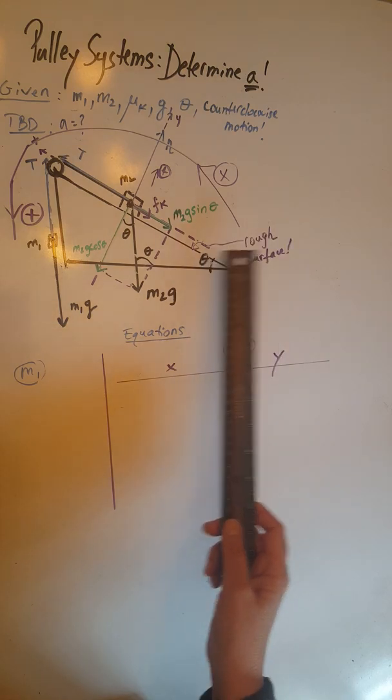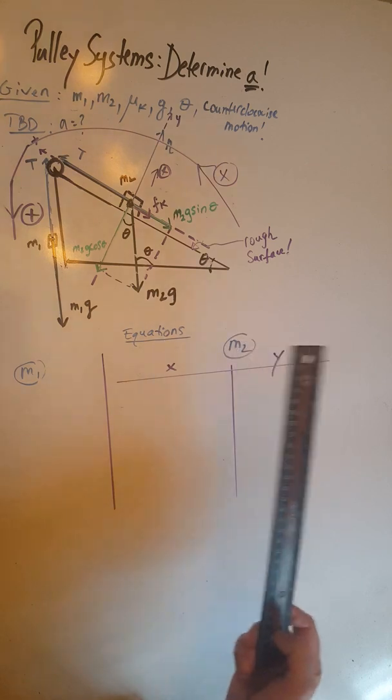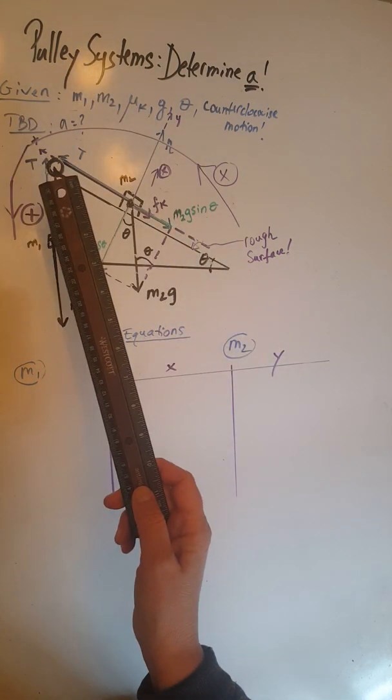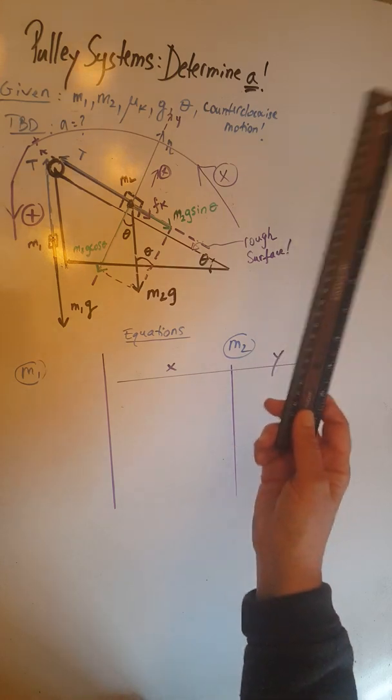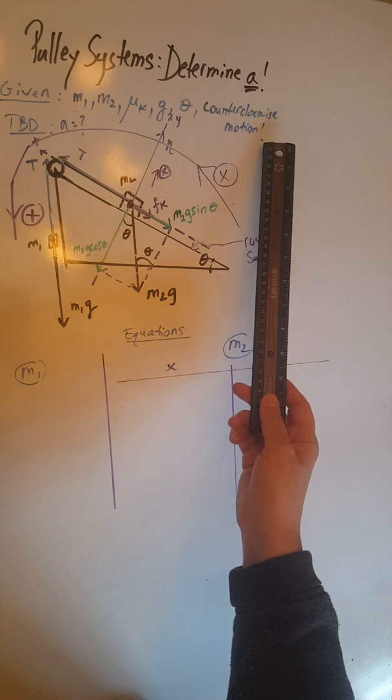This ramp is a rough ramp, therefore there is a coefficient of friction mu k that is also given together with the masses of the objects, the angle of inclination, and the fact that this entire system is moving counterclockwise.